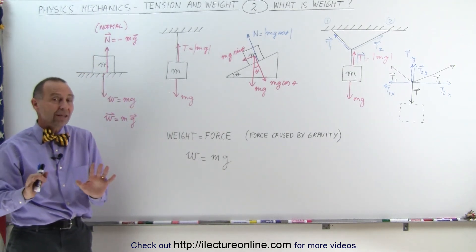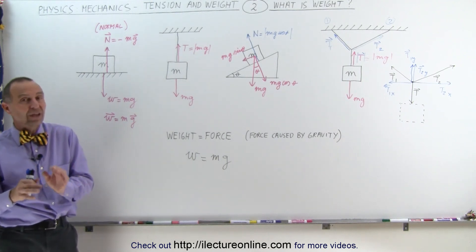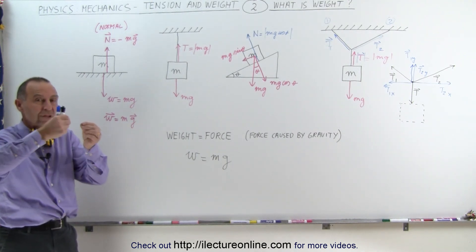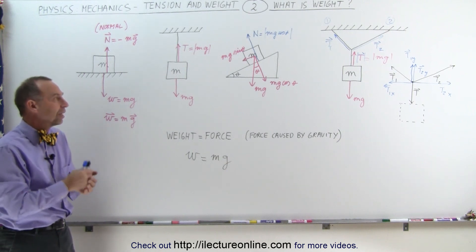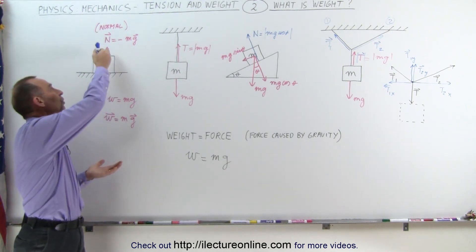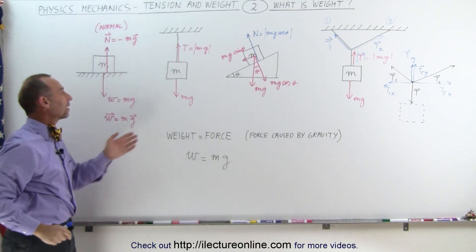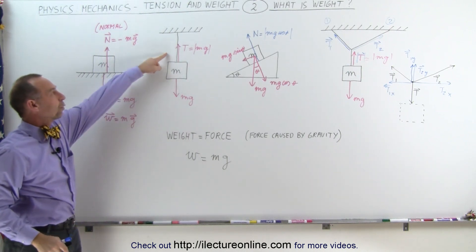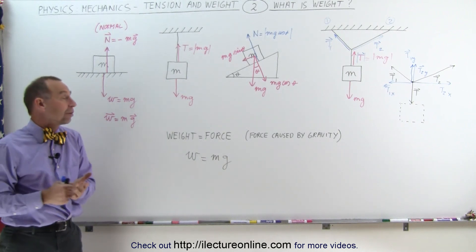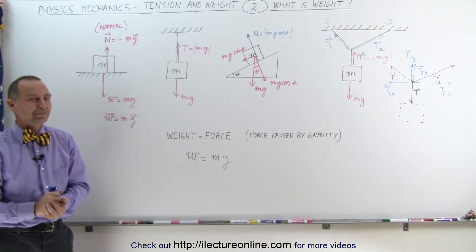So now we understand the difference between weight and mass, and how weight interacts with strings attached to objects. The weight is transferred into either a normal force pushing back on the floor, or a tension in the cable counteracting the weight of the object, and that is how we look at that.